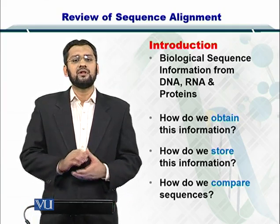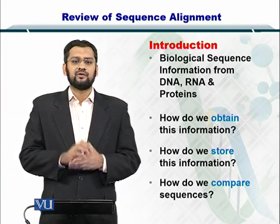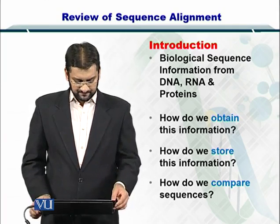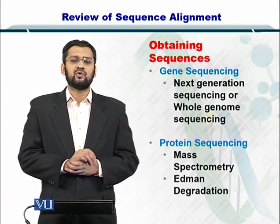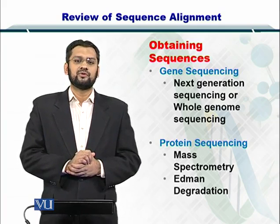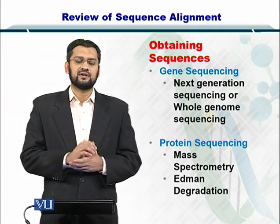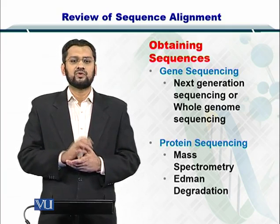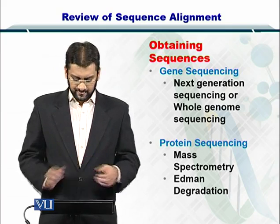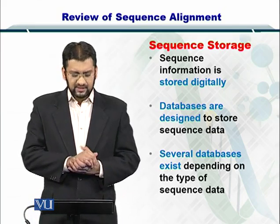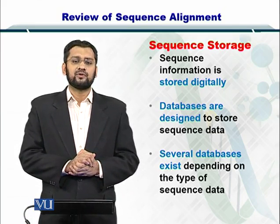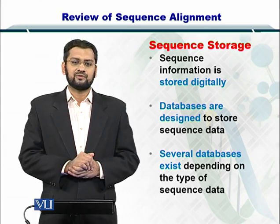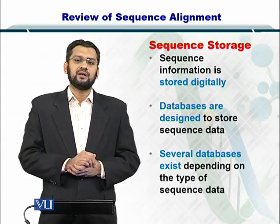This information is very useful in comparing sequences such as protein homology or DNA homology. To obtain the sequences, you may have to perform experimental protocols which involve next generation sequencing for genome sequences. For protein sequences, you may use mass spectrometry. To store this sequence information, you first need to convert the data output by these experimental protocols into digital format. Most modern instruments already do this for you and provide data on a computer.